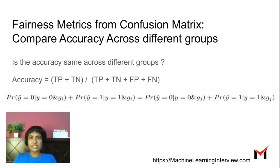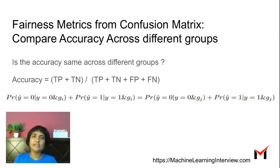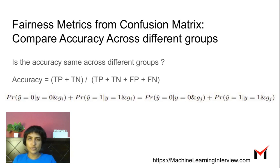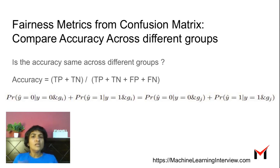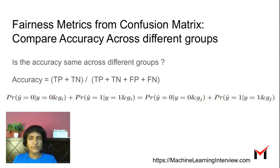Another metric commonly used is accuracy, one of the most popular metrics for binary classification. Accuracy is the total number of correctly classified examples divided by the total number of instances we tried to classify. Is the accuracy the same across both groups — the male examples and the female examples — in the test setting? These are three simple metrics to see whether our models are being fair with respect to different groups, in this case male and female with respect to gender.